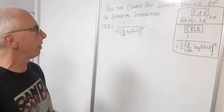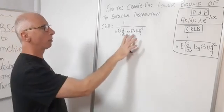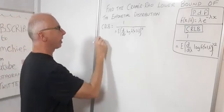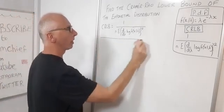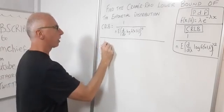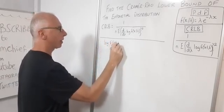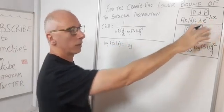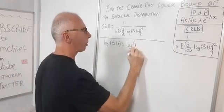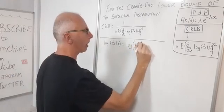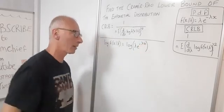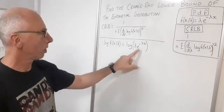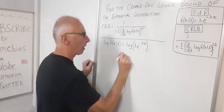Let's break it down into steps. Before we can take the derivative, we first need to take the log. So log of f(x|lambda) — that's our PDF — is the same as the log of the PDF: log of lambda times e raised to the negative lambda x.